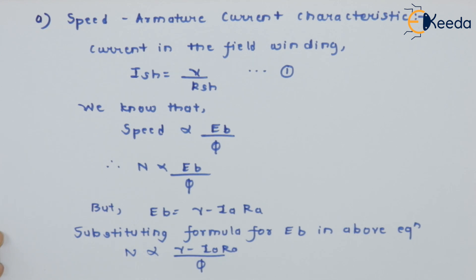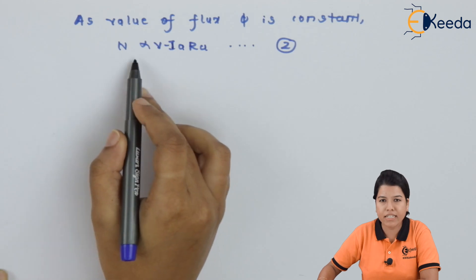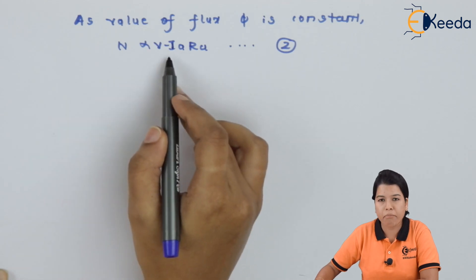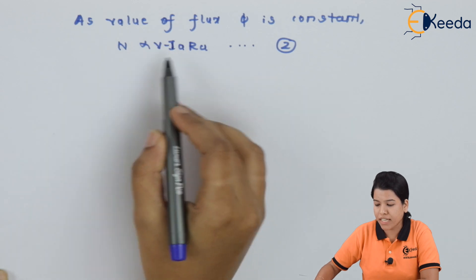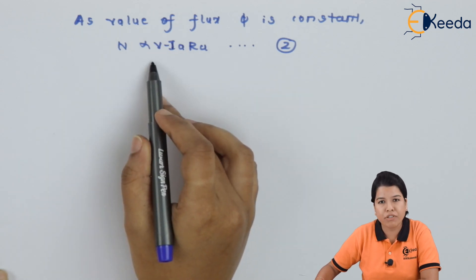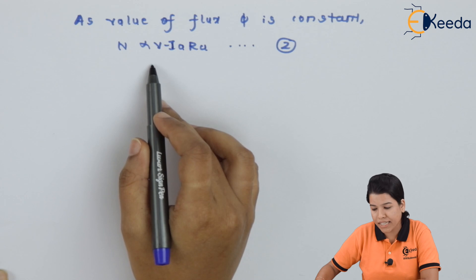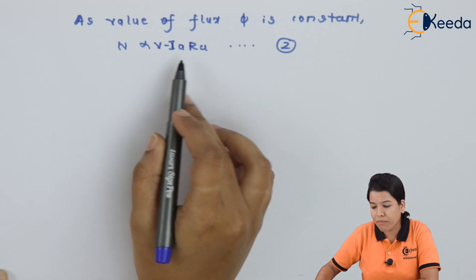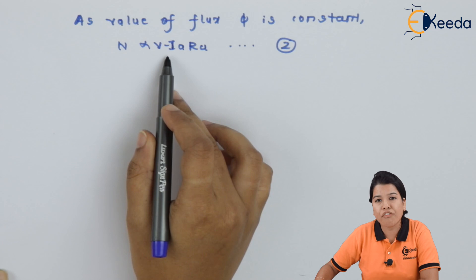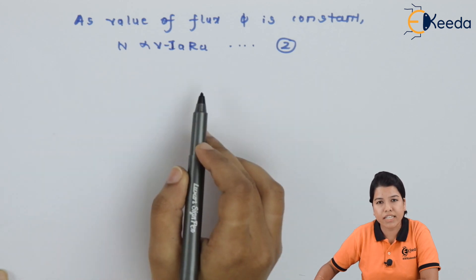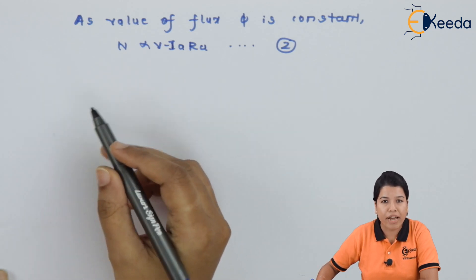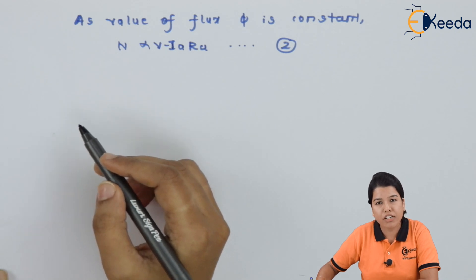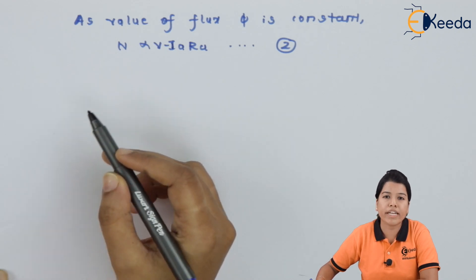Since we neglect the value of armature reaction, the flux remains constant. Hence, the equation can be modified as: N is directly proportional to (V − Ia·Ra). Since V is the supply voltage which always remains constant, the speed depends upon the value of armature current. If the armature current goes on increasing, the speed will go on decreasing, and vice versa.